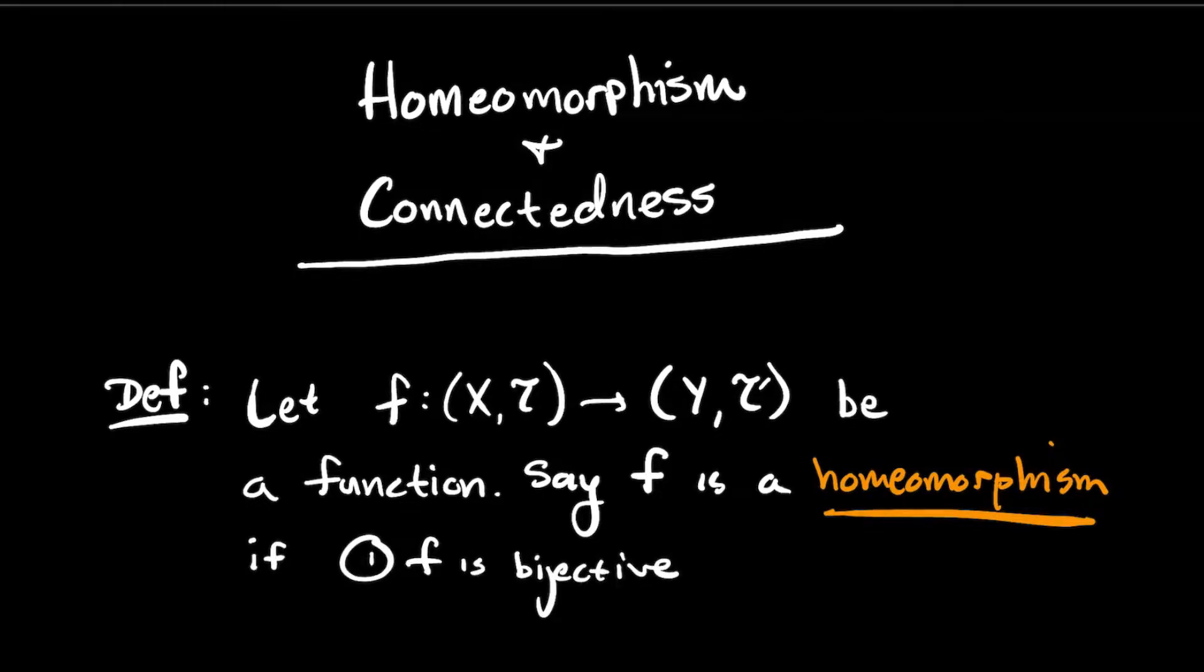Number one, F is bijective, so it's one-to-one and onto. And number two, both F and its inverse are continuous functions.